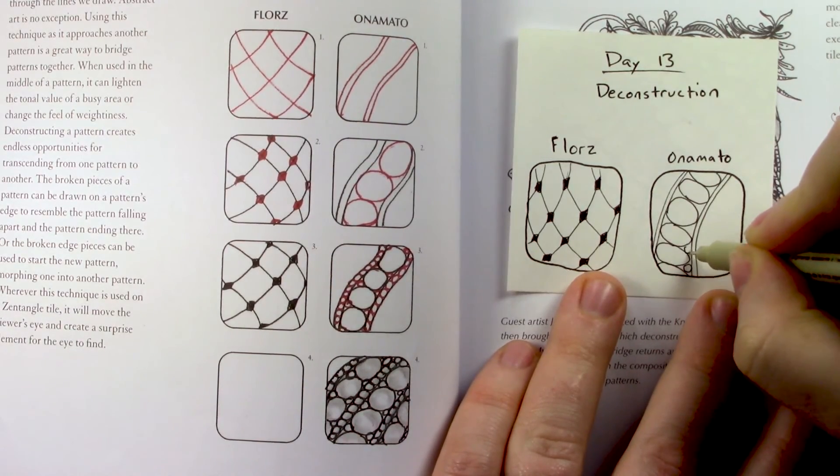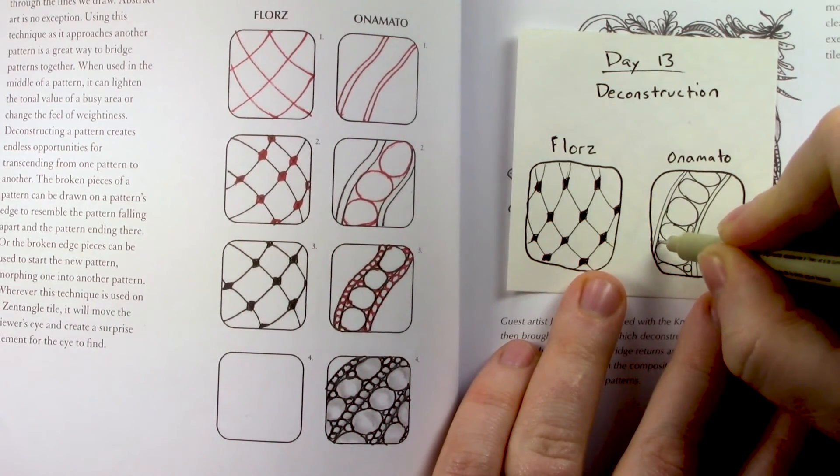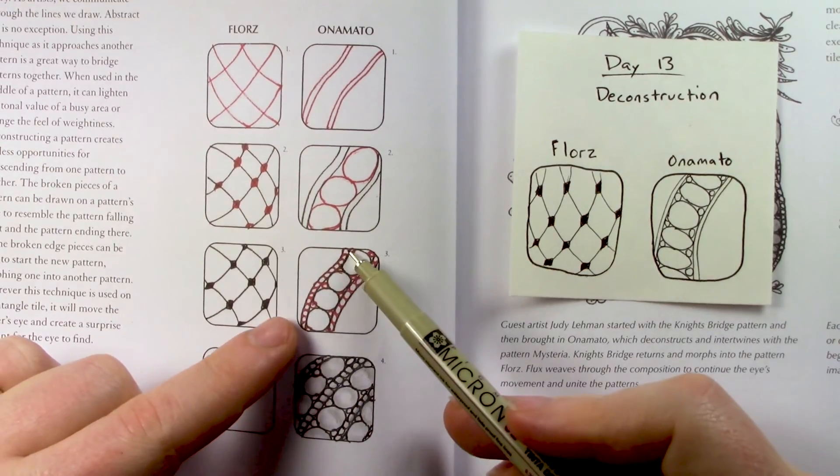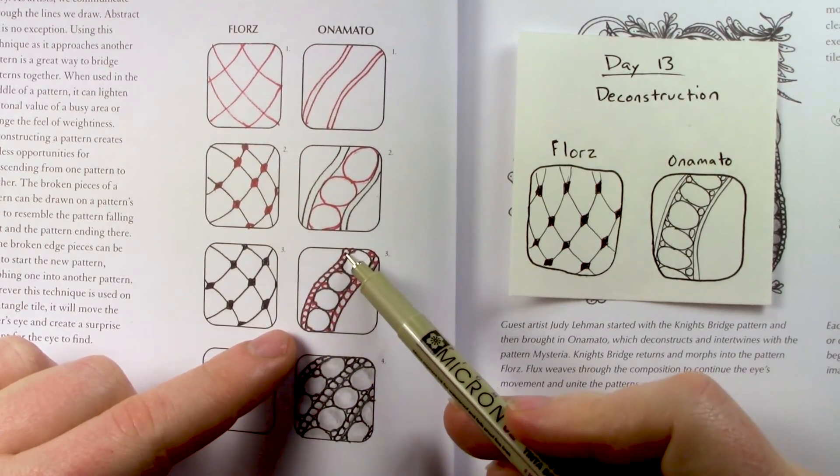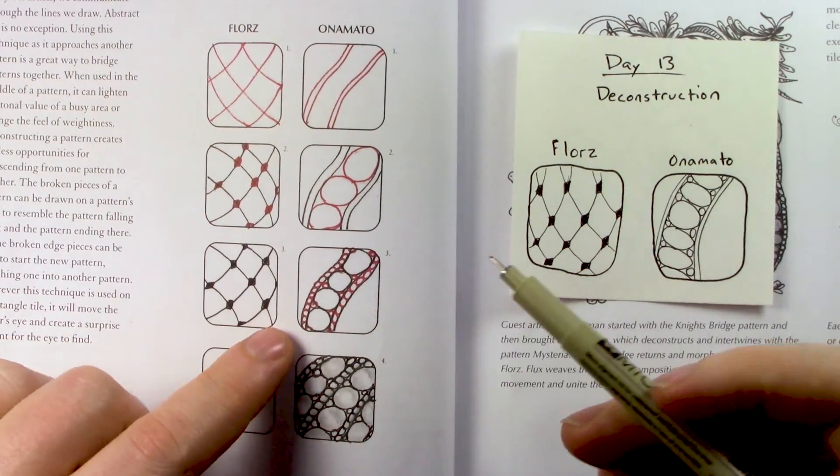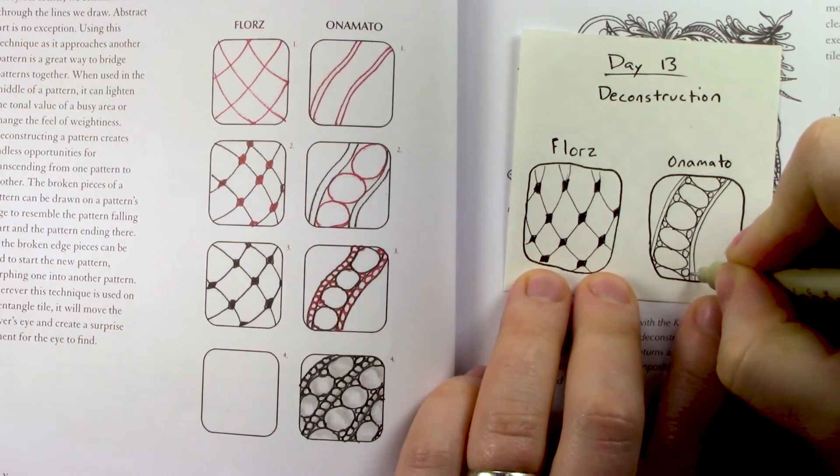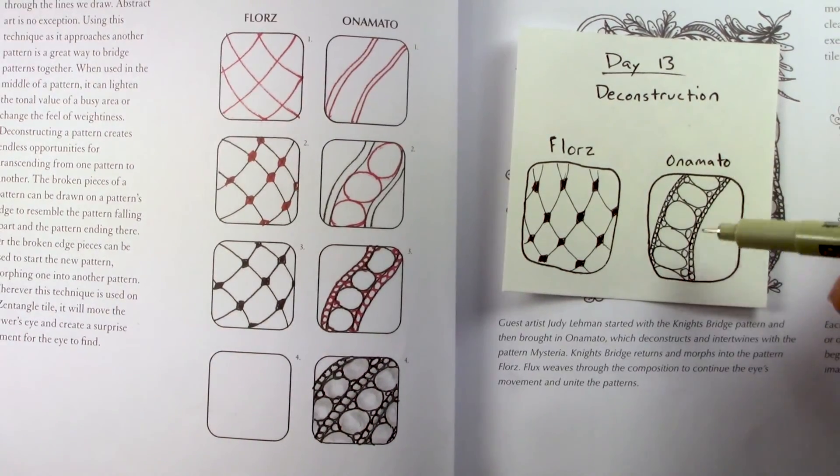So a circle in the gap, a circle, circle, circle. And then in the little ribbon-y shapes, we're going to make rows of tiny circles. I think of that as like a string of pearls.